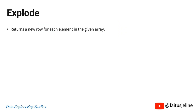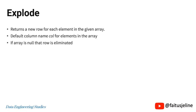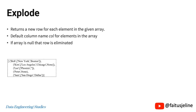The Explode function is used to create new rows for each element when we pass an array or a map. The default column name is 'col' for elements in an array, and if the array is null, the row will be eliminated.